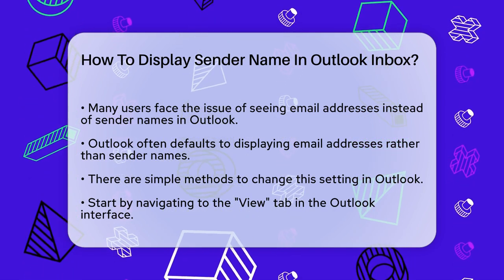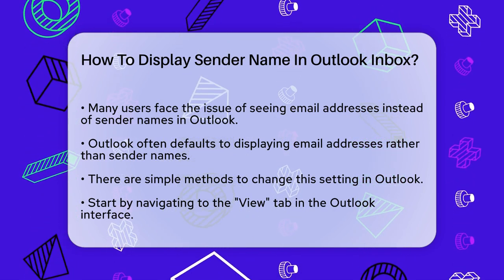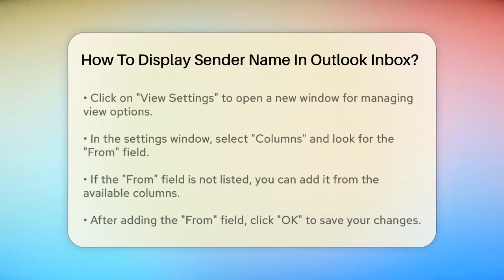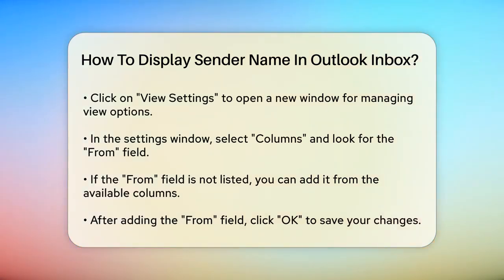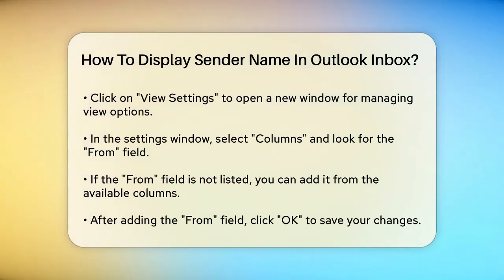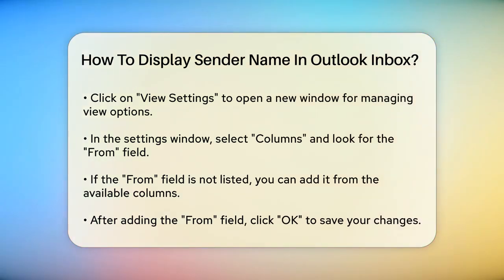One of the easiest ways is to adjust the view settings in Outlook. Start by going to the View tab in your Outlook interface. Here you'll see an option called View Settings. Click on this and it will open a new window where you can manage your view settings. In this window, click on Columns and then select the From field. This field might already be listed, but if it's not, you can add it from the Available Columns list. Once you've added the From field, click OK to save the changes. This should now display the sender's name in your Inbox.